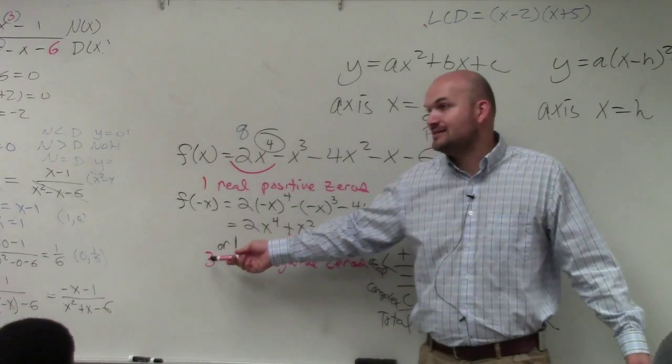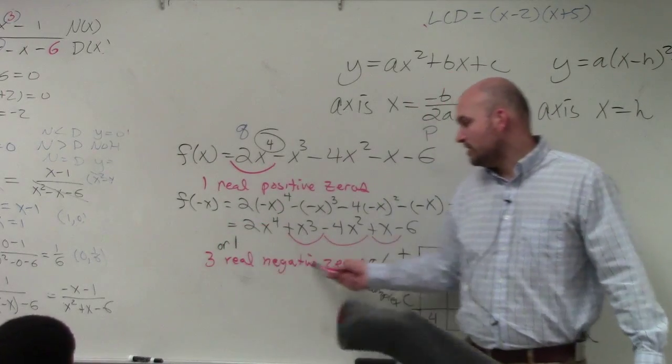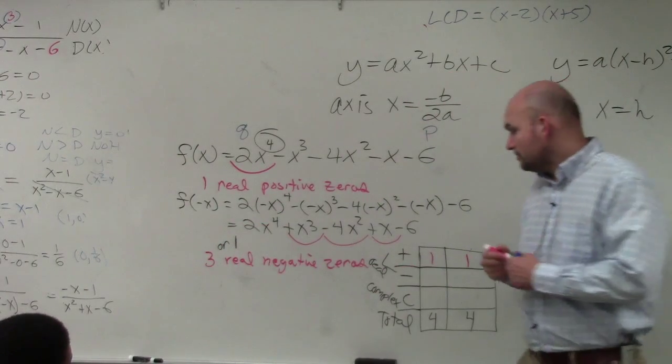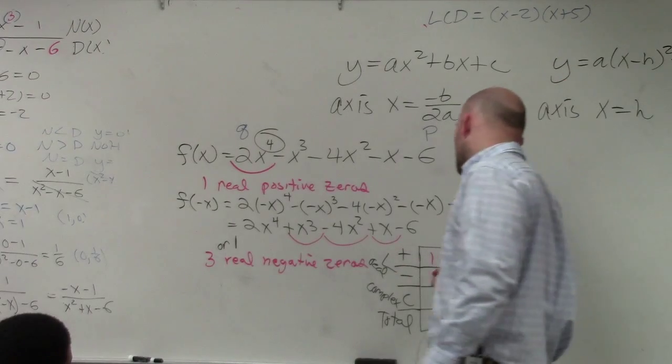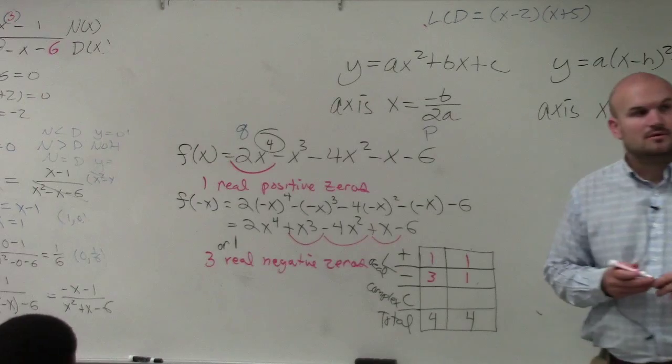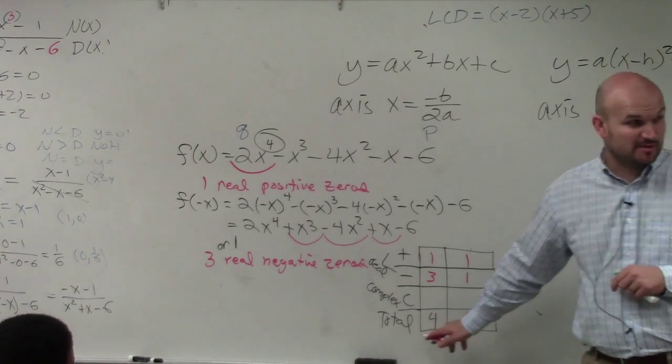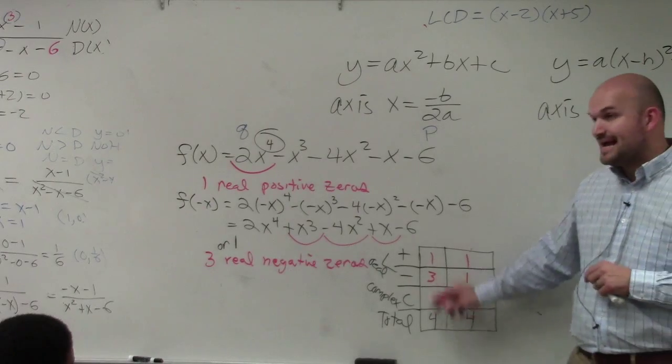Here, I can subtract an even number two from three. So it's three or one real negative zeros. So the number of negative zeros are three or one. Why this is important? We know, ladies and gentlemen, that the total number by the fundamental theorem of algebra has to add up to four.